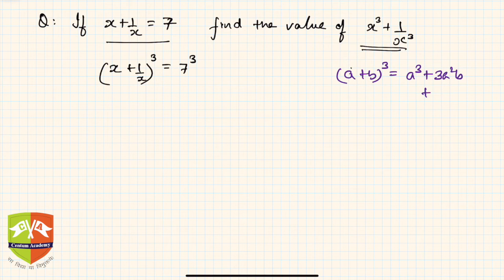Let us use that. So it is nothing but x cube plus 3 times x squared times 1 upon x plus 3 times x times 1 upon x squared.